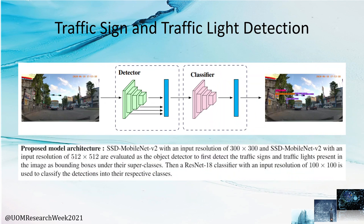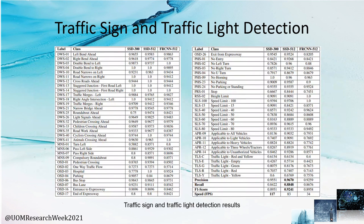Moving on to traffic sign and traffic light detection — this slide shows the model architecture. First, a state-of-the-art object detector is used to detect the traffic signs and traffic lights as bounding boxes under their super classes. We evaluate the performance of SSD and Faster R-CNN as the object detector using TensorFlow. Next, a ResNet-18 classifier trained using PyTorch is used to classify the detections to the traffic sign and traffic light classes. The SSD module with an input resolution of 500 achieves an F1 score of 92.41% and is used in the workstation. For the embedded system, we use the SSD module with an input resolution of 300 and F1 score of 89.51% considering the real-time requirement.